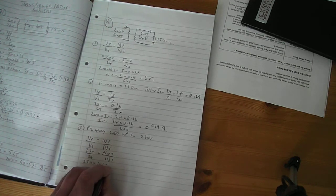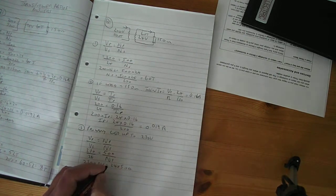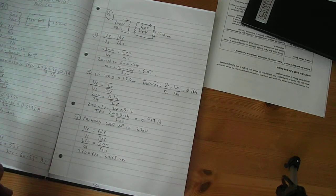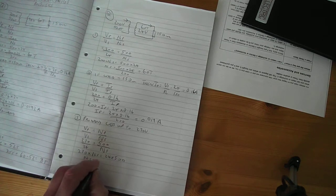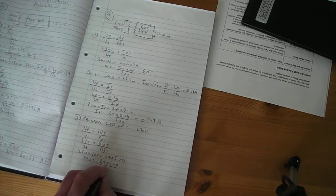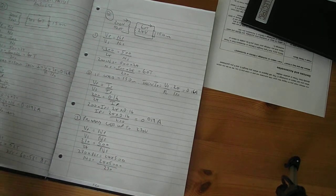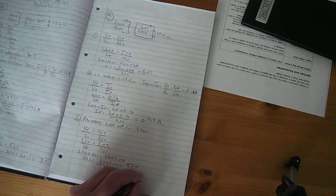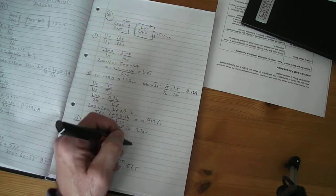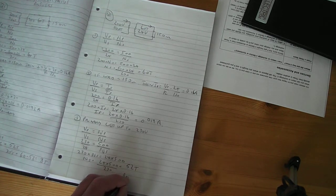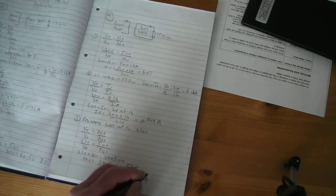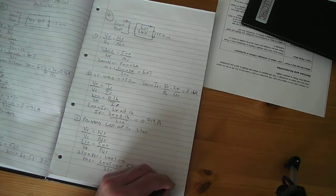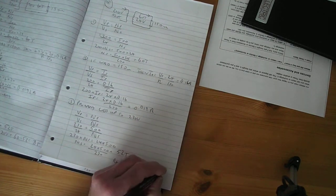Cross multiply. 230 times Ns equals 24 times 500. Can you still see that on there? Just push that up a little bit. So Ns equals 24 times 500 divided by 230 equals 52 turns. So the new turns is 52, the original is 60, so we need to reduce it by 60 minus 52 turns equals 8 turns.